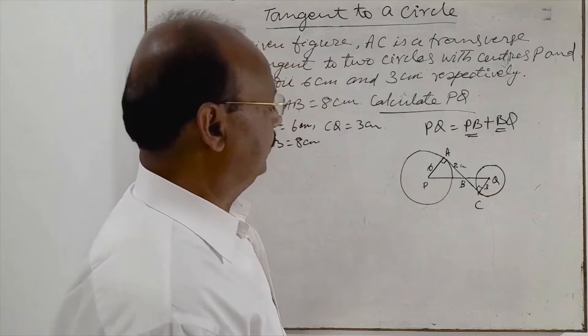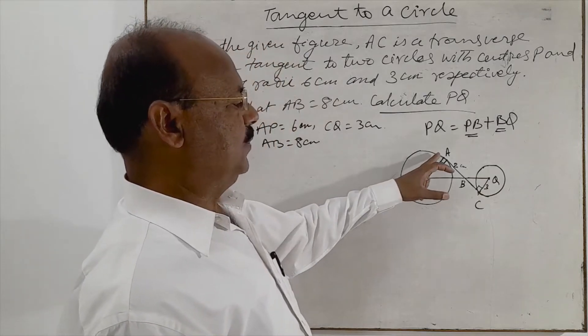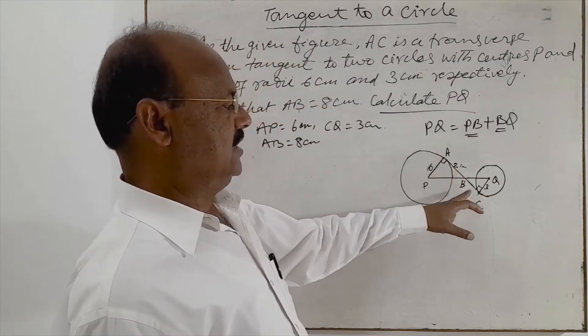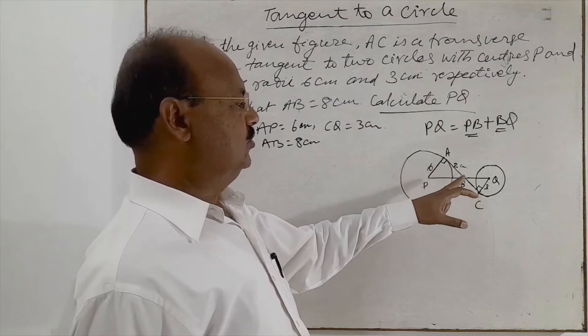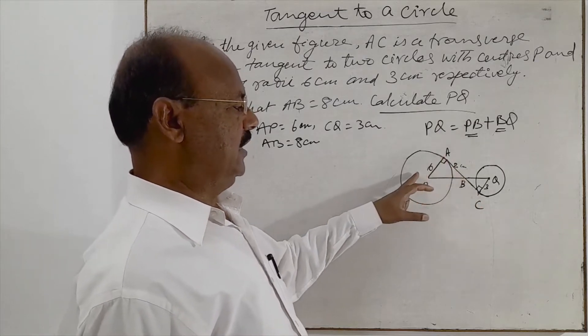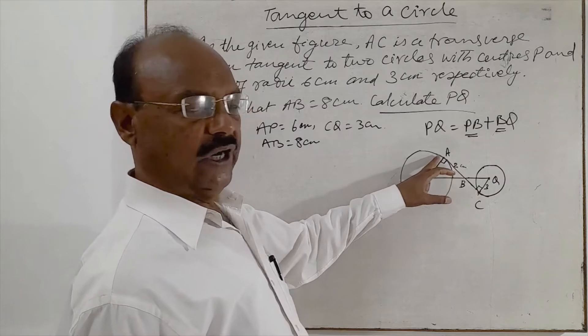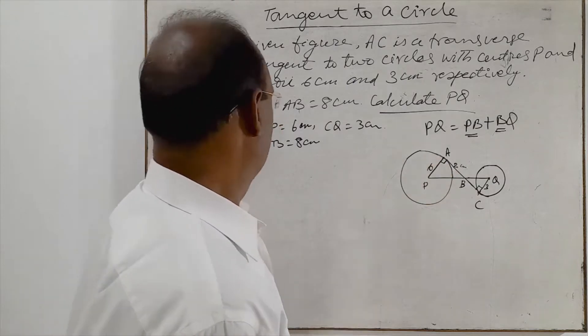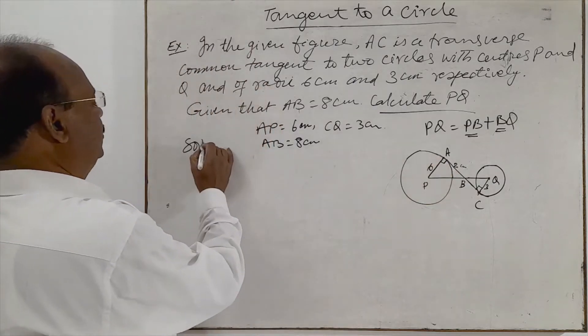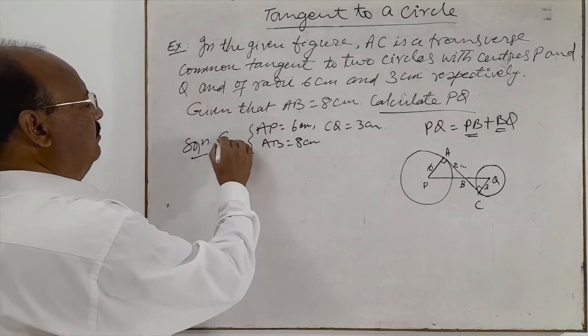Now, you see here PA is perpendicular to this tangent AB because we know that tangent is perpendicular to the radius at the point of contact. So let us see the solution.